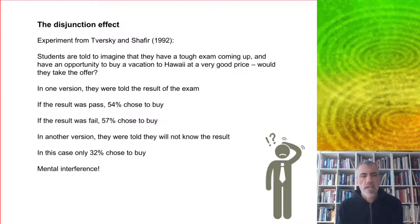The disjunction effect goes back to this experiment from Tversky and Shafir. They asked students to imagine that they have a tough exam coming up and have an opportunity to buy a vacation to Hawaii at a very good price. Would they take the offer?